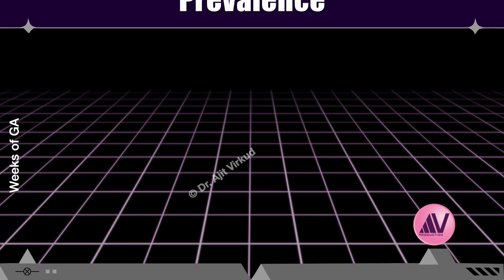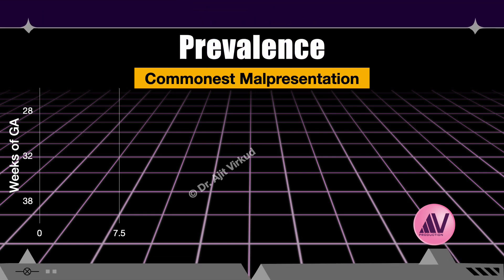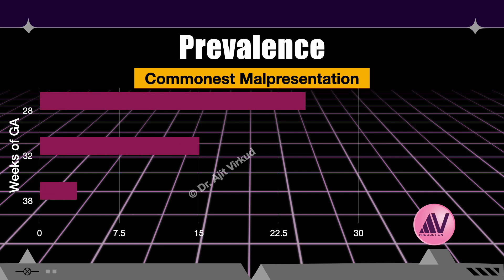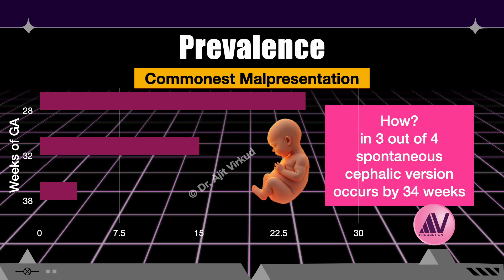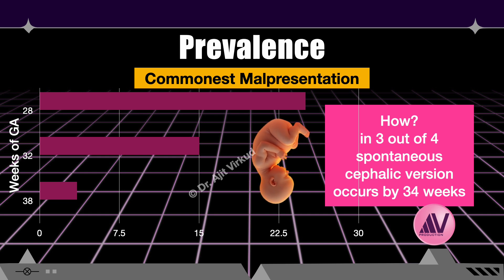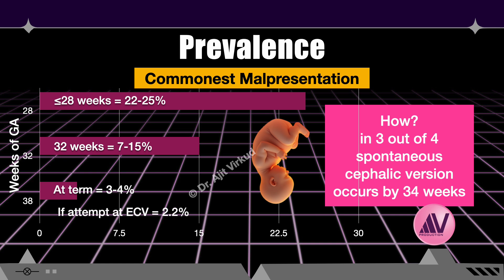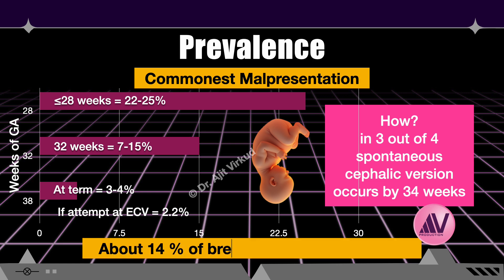The commonest malpresentation is breech presentation. Its incidence decreases significantly with advancing gestational age, primarily due to spontaneous cephalic version. In 3 out of 4 cases, spontaneous cephalic version occurs by 34 weeks. Up to 28 weeks, the incidence is 22–25%; by 32 weeks it decreases to 7–15%; and by full term at 37 weeks, it comes down to 3–4%. In centres performing external cephalic version at 34–37 weeks, the incidence in labour comes down from 3–4% to 2.2%. About 14% of breech births are recurrent.